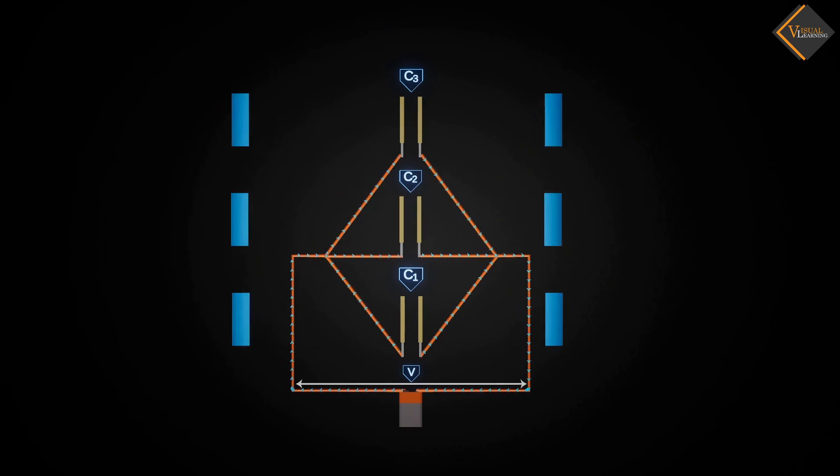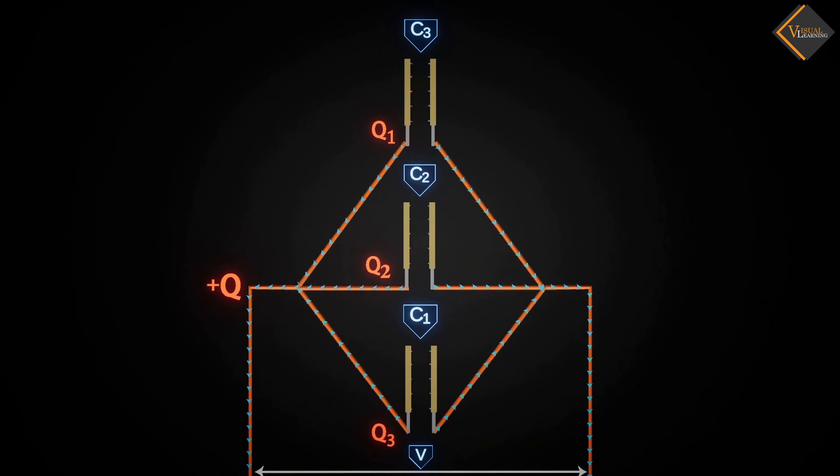When the circuit is complete, charge Q transfers to all three capacitors. This charge distributes among the capacitors in different amounts denoted as Q1, Q2 and Q3. Due to induction, an equal amount of charge is created on the second plate of each capacitor, which sums up to the initial charge.